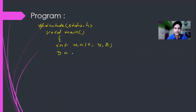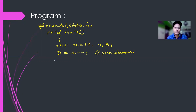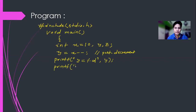In the next statement I'm writing y = x--. This is post-decrement — the operator comes after the variable, that's why it is called post-decrement. Then I'm using a printf statement to display the value of y: printf("y = %d", y); and the next printf to display x: printf("x = %d", x);